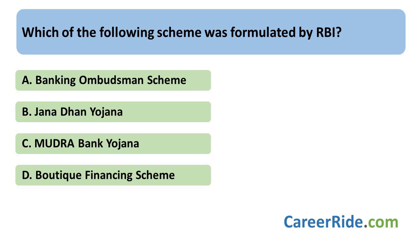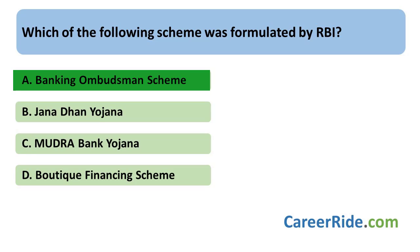Which among the following schemes was formulated by the Reserve Bank of India? Jan Dhan Yojana and the Pradhan Mantri Mudra Yojana were launched by the Government of India under the leadership of Narendra Modi. The Banking Ombudsman Scheme was launched by the Reserve Bank of India in the year 2006. It was introduced under Section 35A of the Banking Regulation Act 1949. This scheme is a mechanism created by the RBI to address complaints raised by bank customers, run directly by the RBI to ensure consumer protection. The Boutique Financing Scheme is another scheme launched by the State Bank of India.